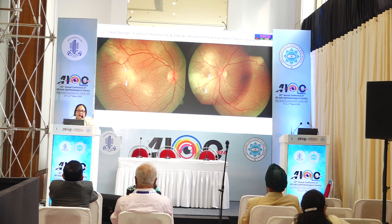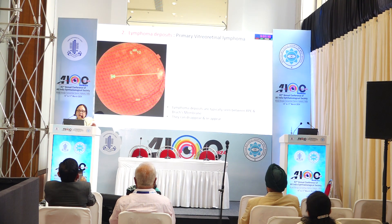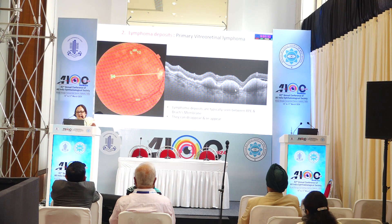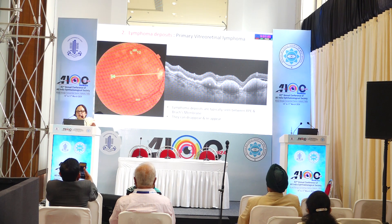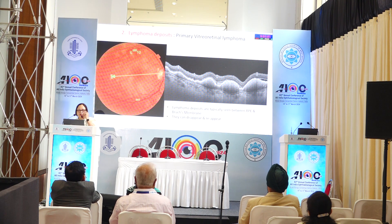If you see the clear dot sign, it is likely to be CSR and not choroiditis. The second entity is deposits of lymphoma. Lymphoma deposits are very typical — they get deposited between the RPE and Bruch's membrane. That is the characteristic of lymphoma deposits.